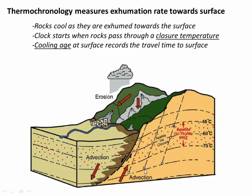As rocks move upwards, they cool, because it gets hotter as you go down in Earth. For example, this thermal gradient is 45 degrees here and 75 degrees here. So as rocks move up towards the surface, they actually cool. The idea of low-temperature thermochronology is that we essentially have clocks within certain minerals within the rock. Those radioactive clocks start when the rock and the mineral pass through a closure temperature. We're going to see an example of a closure temperature of 65 degrees Celsius for apatite.